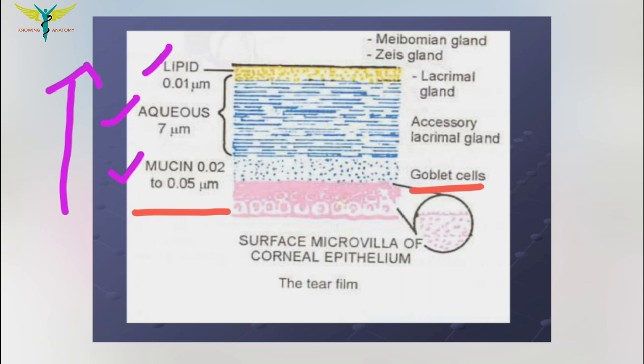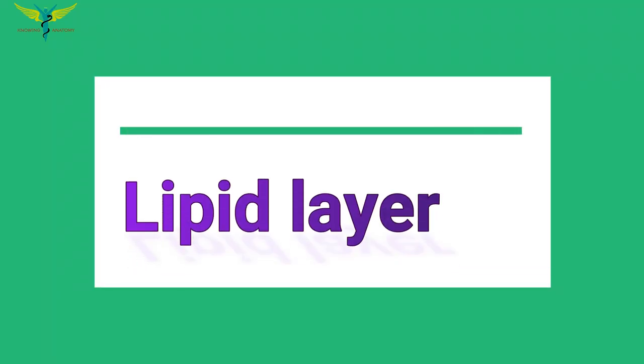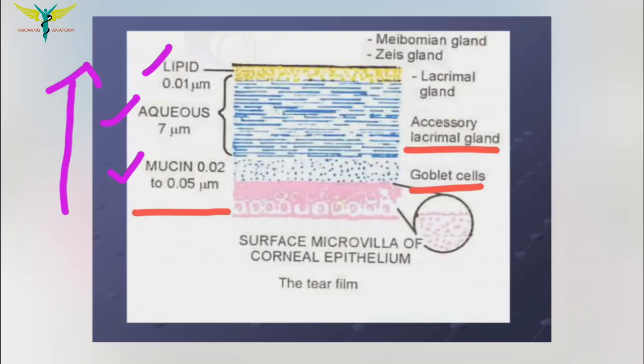The second layer is the aqueous layer, and it forms most of the tear film. The aqueous layer contains water and consists of the large part of the tears, which are produced from the accessory lacrimal glands.